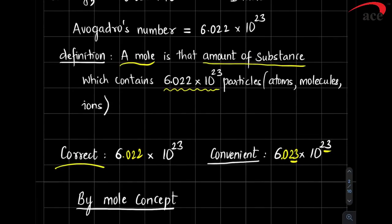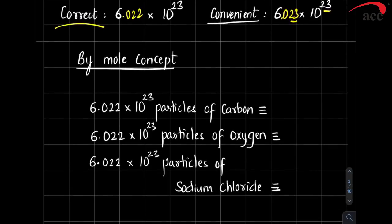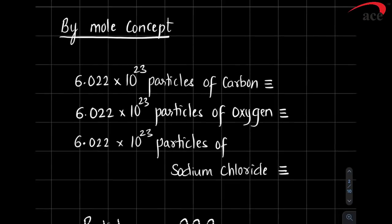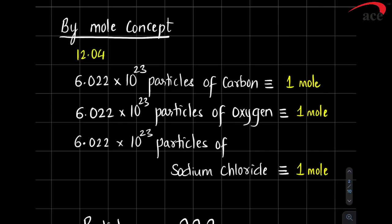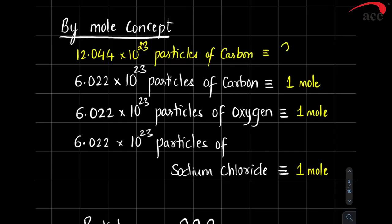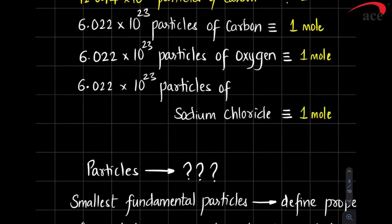After knowing the definition of a mole, we go ahead. Whenever you take 6.022×10²³ particles of carbon, you have taken one mole of carbon. Similarly 6.022×10²³ particles of oxygen is one mole, and 6.022×10²³ particles of sodium chloride is one mole of sodium chloride. If somebody takes 12.044×10²³ particles of carbon, that is 2 moles.